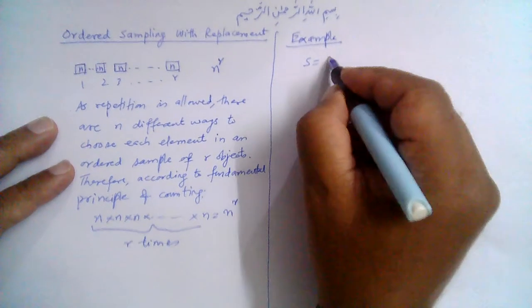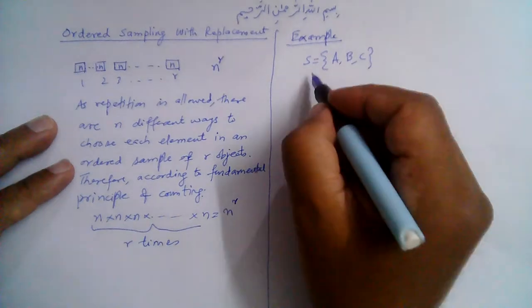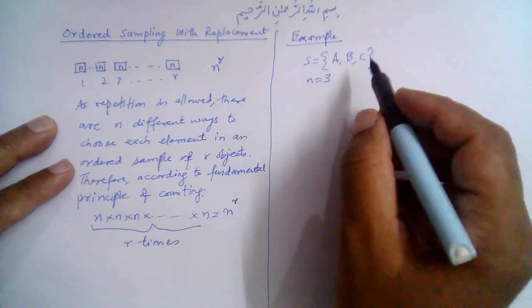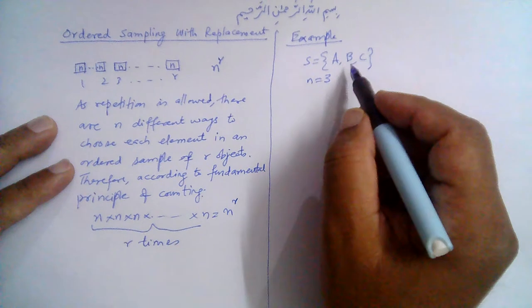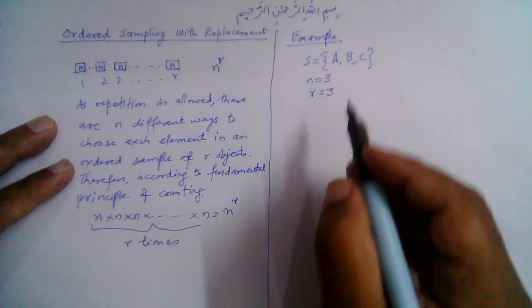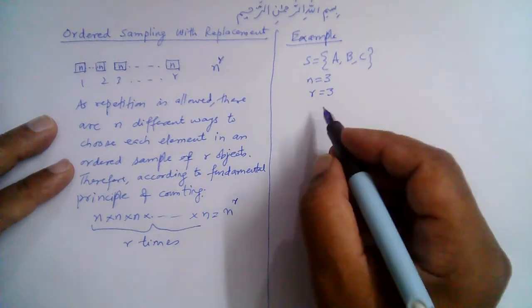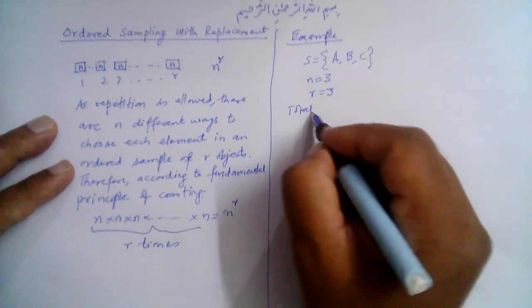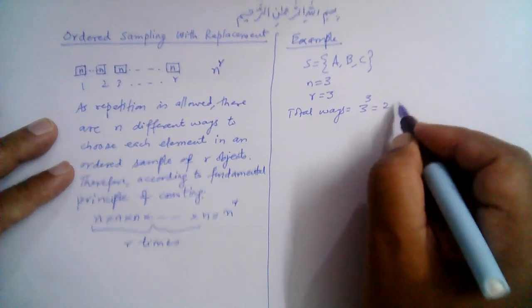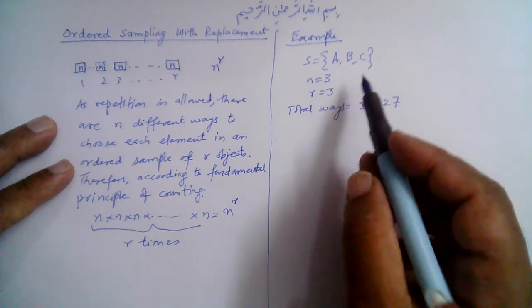For example, consider this sample space with three letters A, B, and C, so n is equal to 3 here. And the total number of possible arrangements, if we take r is also equal to 3, I mean if in a single sample we take all these three objects, then the total number of ways is equal to 3 raised to the power 3, that is 27 possible arrangements are possible when we consider the replacement.